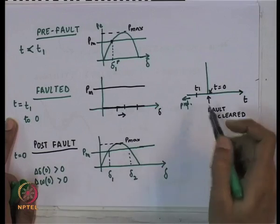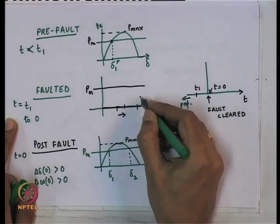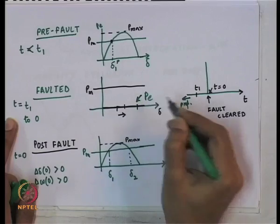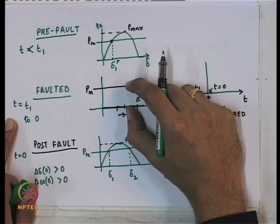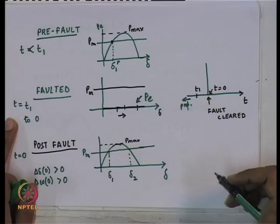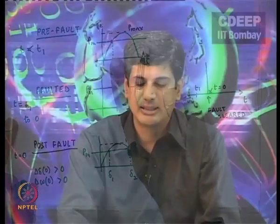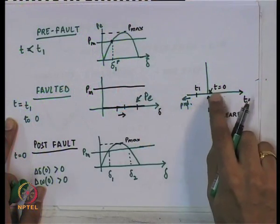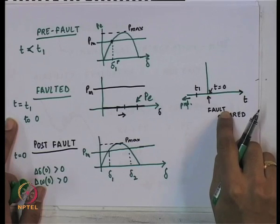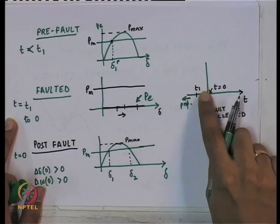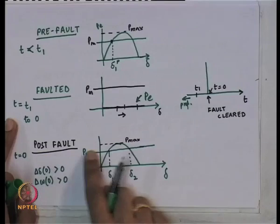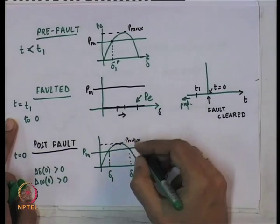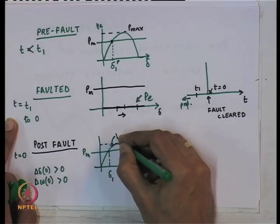Suddenly, mechanical power has become much greater than electrical power, and the machine will accelerate — both delta and omega will start increasing. At time t = 0 (fault clearing time), the fault is cleared as relays detect the fault and trip the faulted transmission line. At that point, the electrical power becomes the post-fault expression.